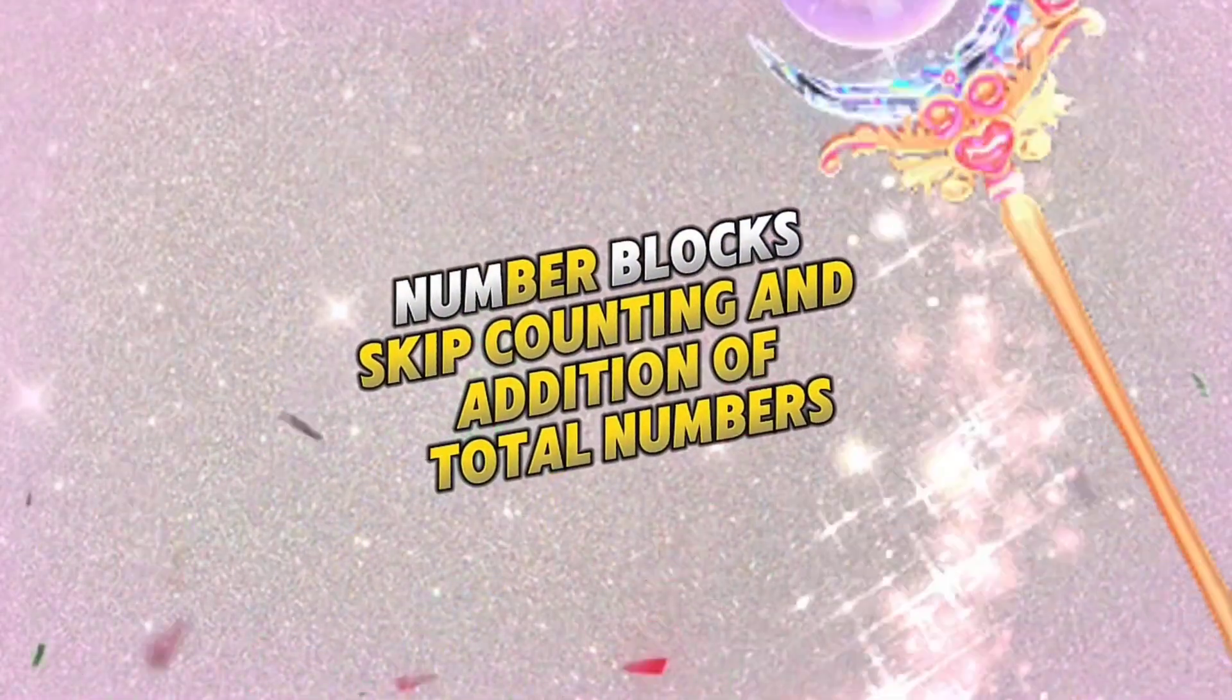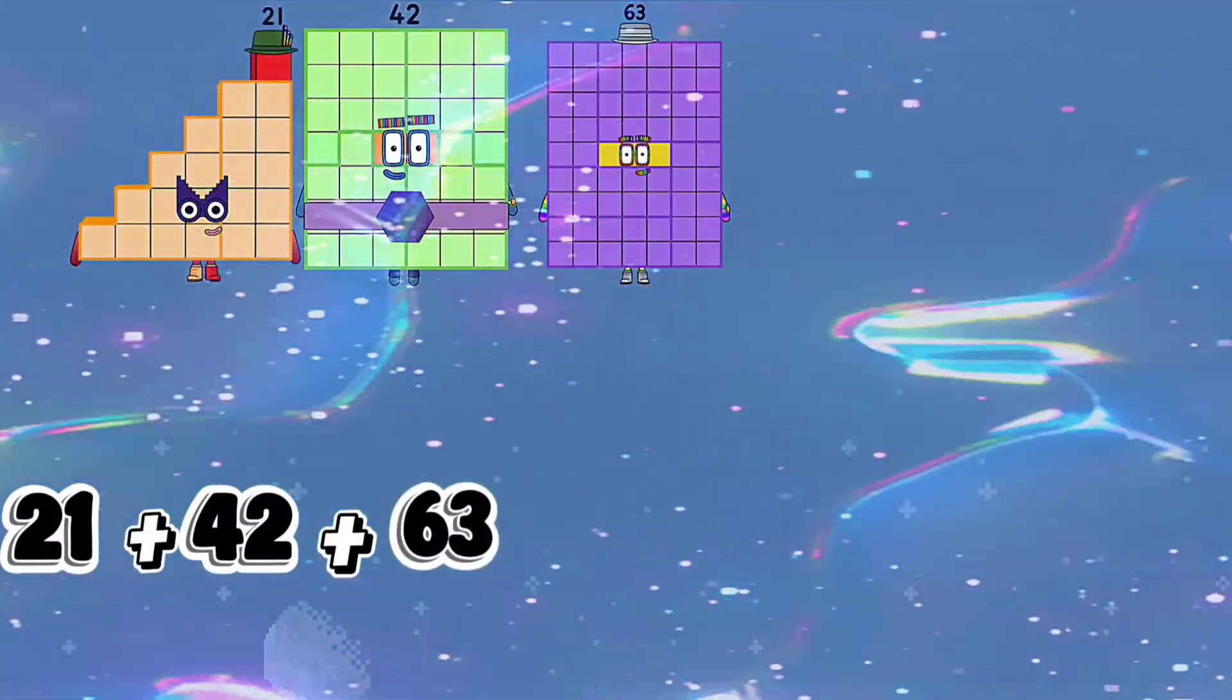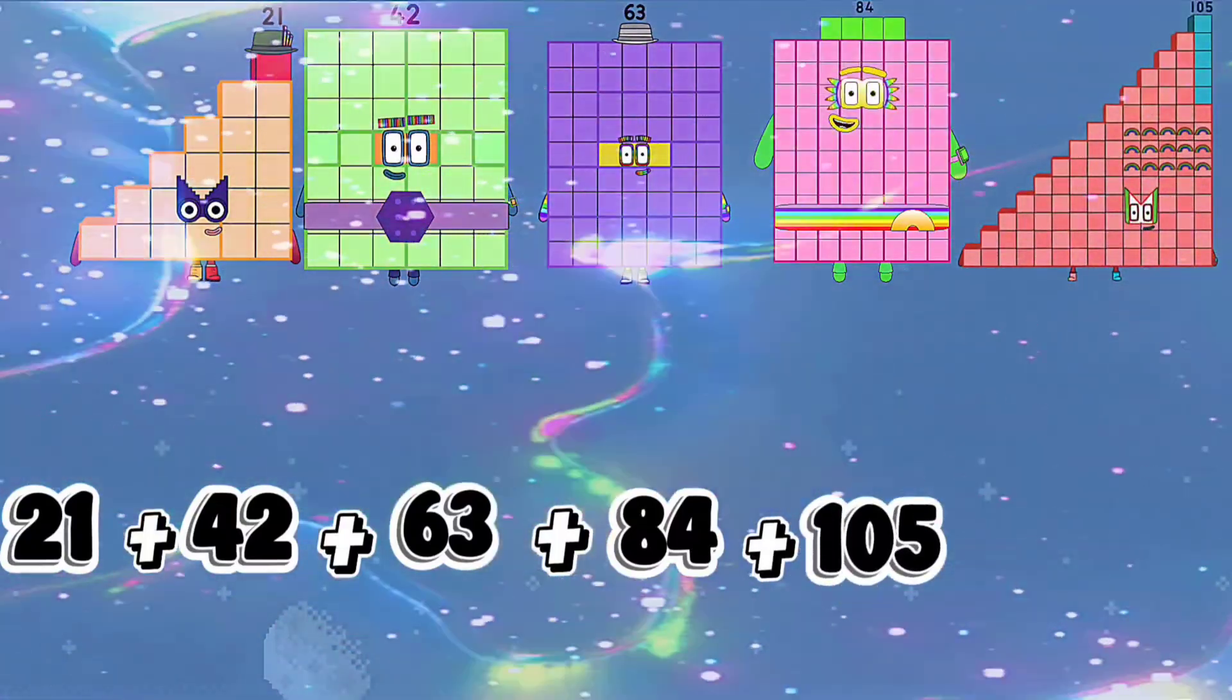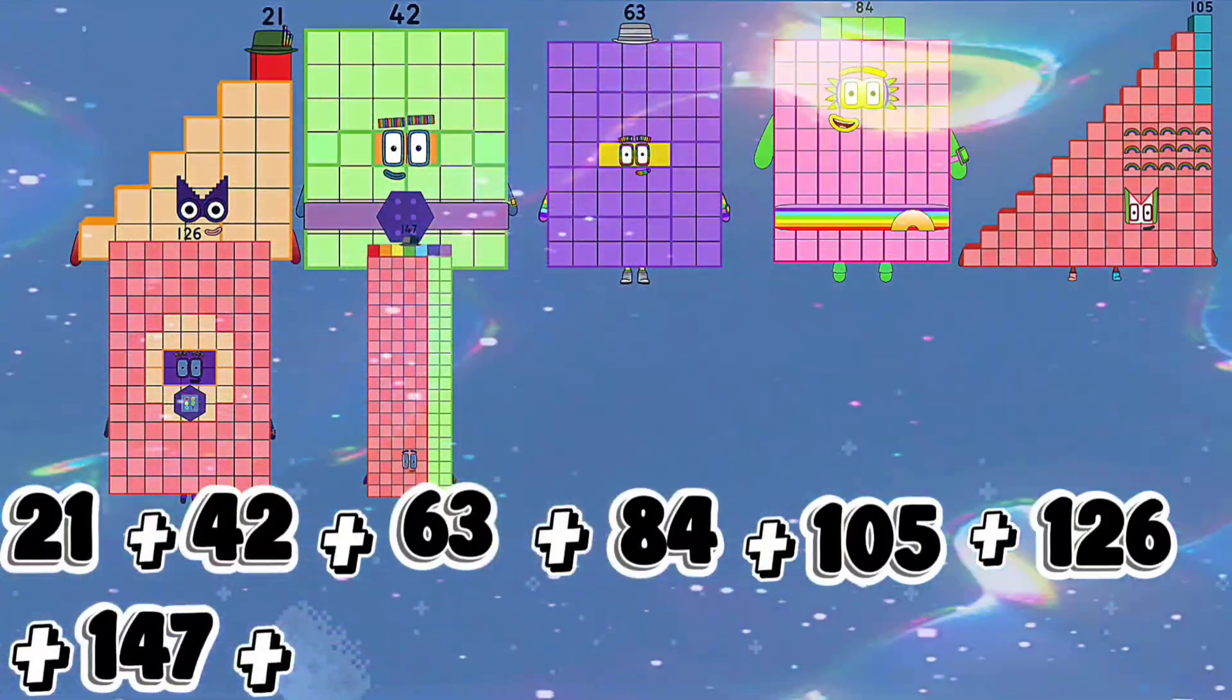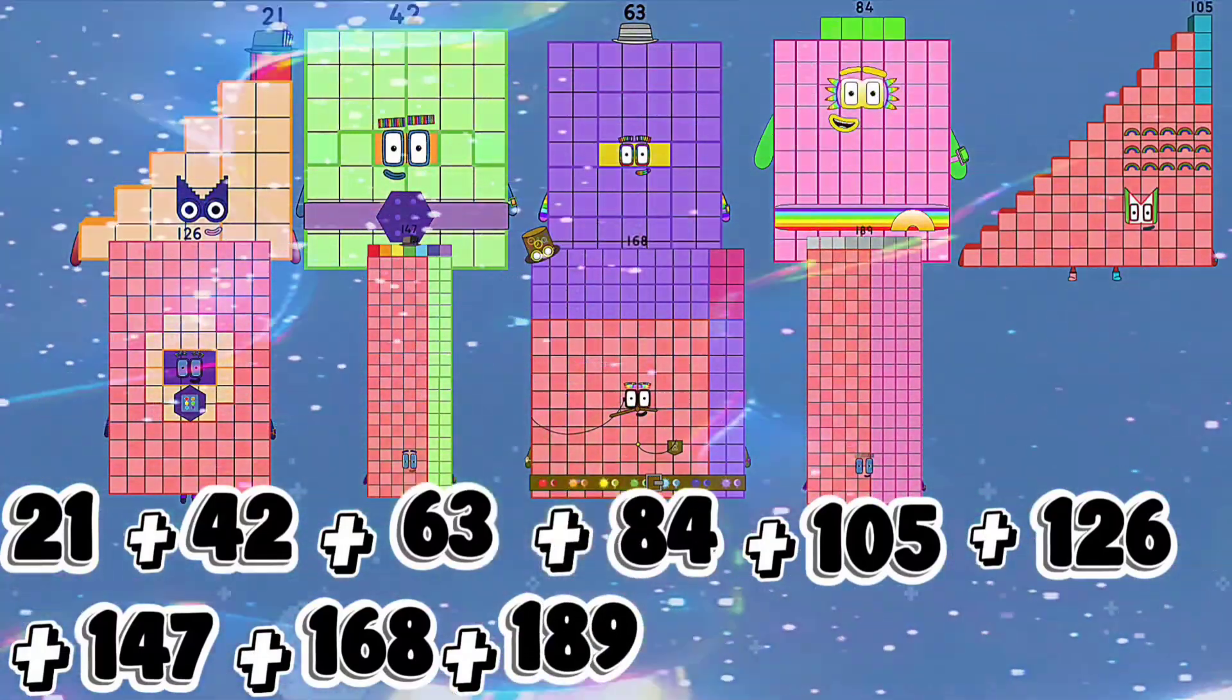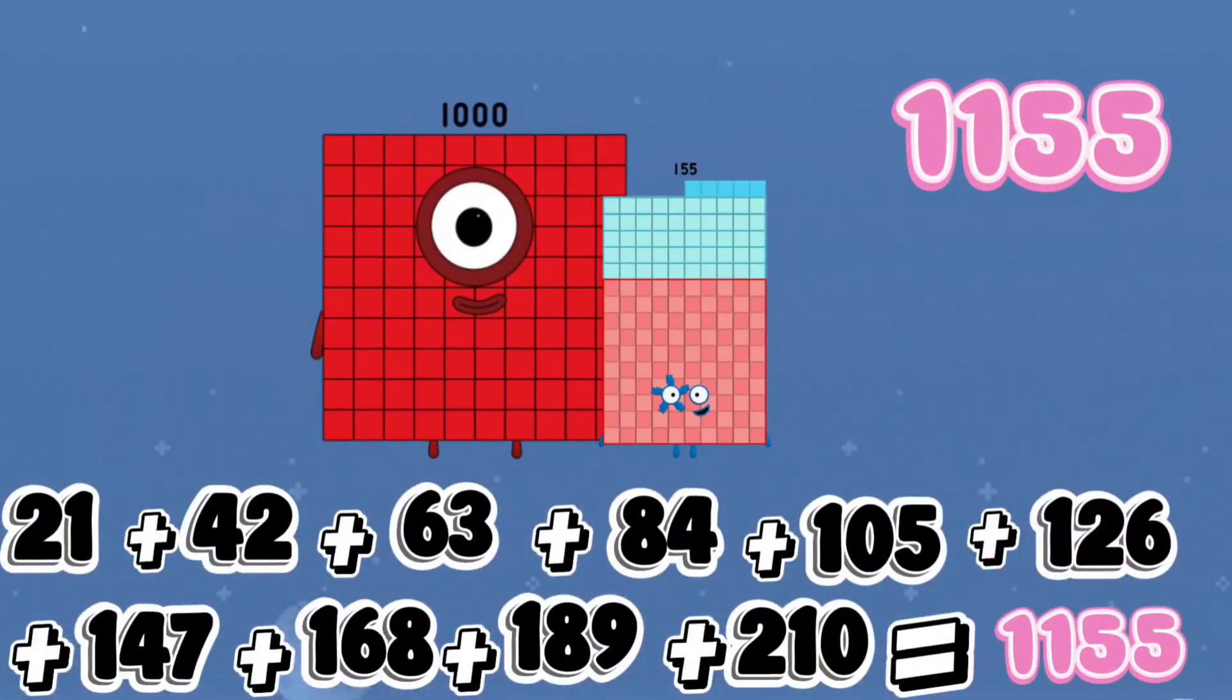Number blocks step counting and addition of total numbers. Let's go! 21 plus 42 plus 63 plus 84 plus 105 plus 126 plus 147 plus 168 plus 189 plus 210 equals 1155.